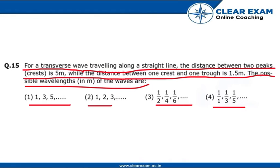Now to solve this question, we know the formula: from a crest to a trough, the distance is given by the formula (2n+1)λ/2. Now we have been given the distance from crest to one trough, that is 1.5 meters.